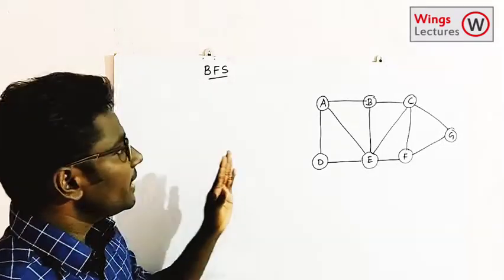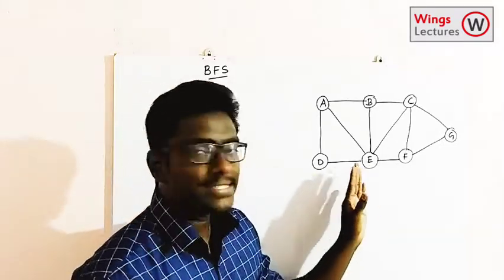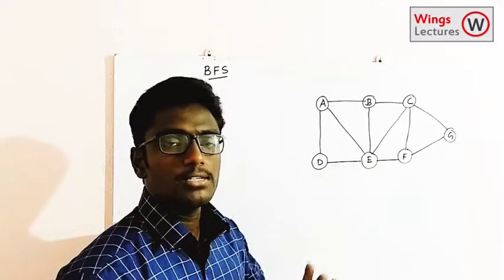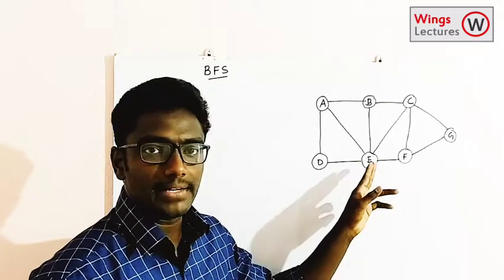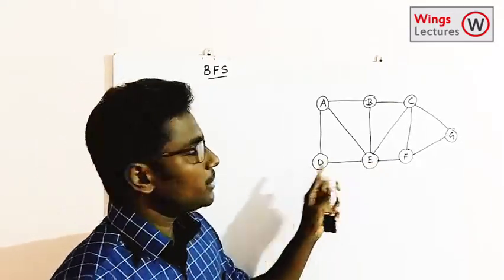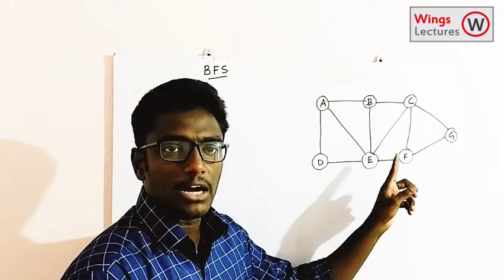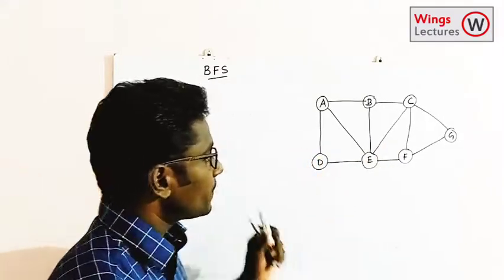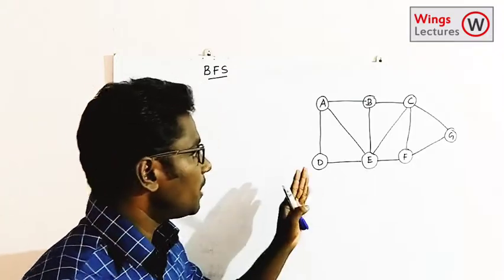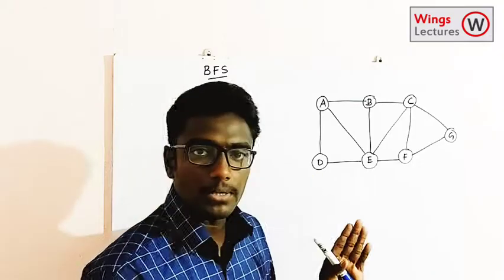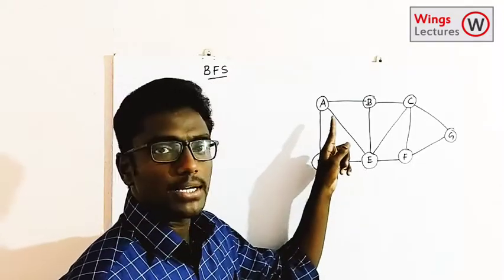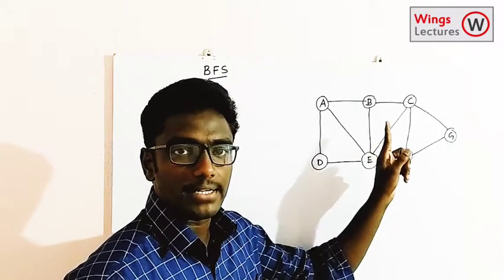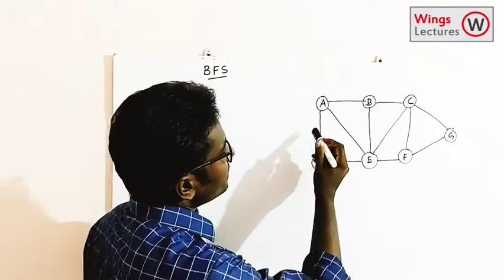Let me explain each one with an example. First we'll look at Breadth First Search. This is an undirected graph because there is no direction on the edges. The first step of the traversal method is to find which one is the source node or starting vertex.